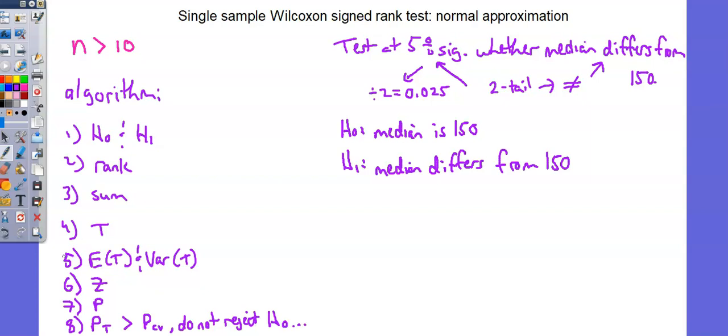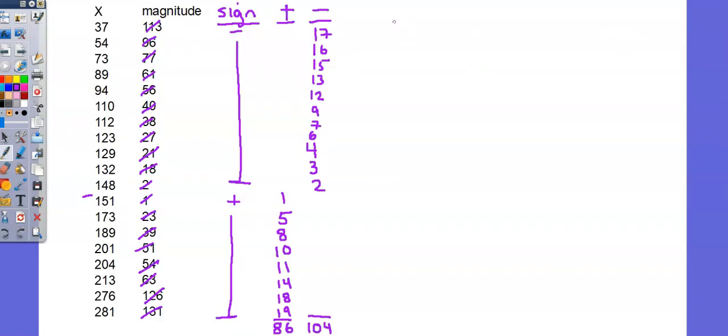Step 4, T, and then Step 5, the expectation and variance. T is going to be the minimum value of the column sums. So T is the smaller of 86 or 104, which is 86. Now for the normal approximation, we need to come up with an expectation. That formula is a ratio of n times n plus 1 quantity over 4. And variance is a ratio of n times n plus 1 quantity times 2n plus 1 quantity over 24.